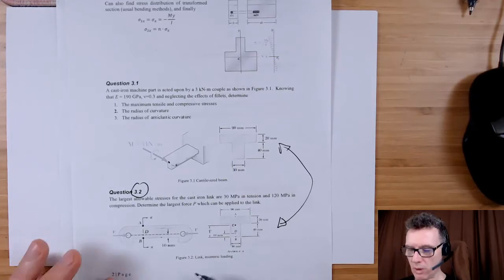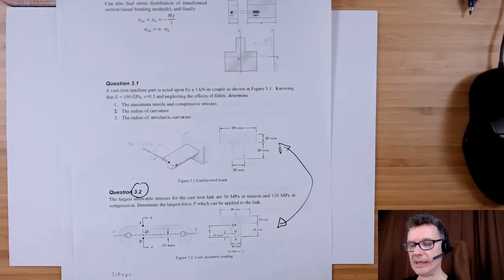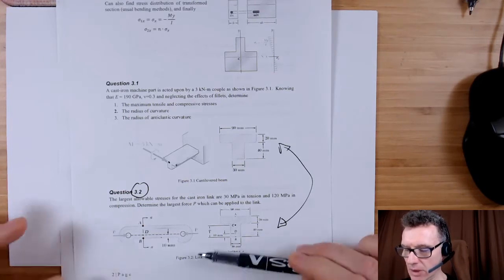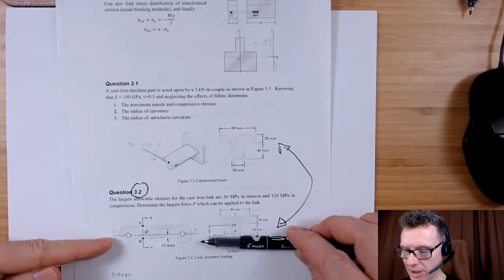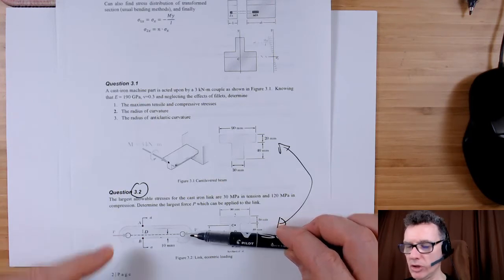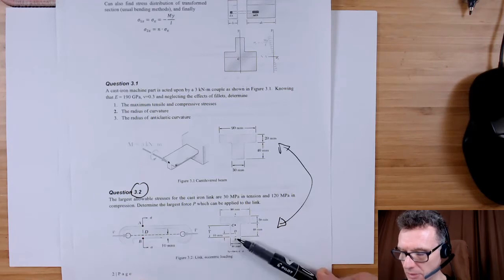We're pushing into this bar here and notice that the force where we're pushing, which is 10 millimeters away from the base, so that's 10 millimeters away, doesn't line up with the neutral axis.